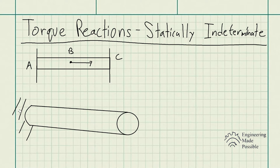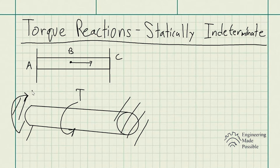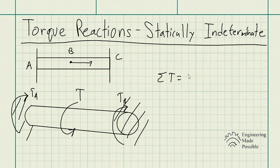In this case we have a shaft fixed on one end as well as the other end, and we have some external torque being applied somewhere along the shaft. We have to solve for the actual reactions at each of the fixed points — torque A and torque B. The sum of the torques is equal to zero because the system is in static equilibrium.